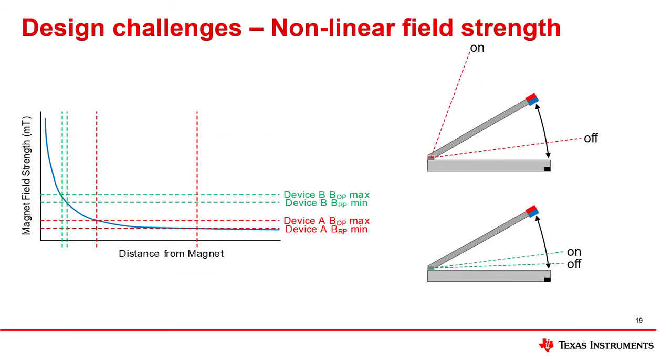Yet another important nuance to acknowledge is the field strength curve non-linearity. Due to the non-linear relationship between field strength and distance, where the BOP and BRP specifications fall on the B field versus displacement curve can have a significant impact on your transition region.